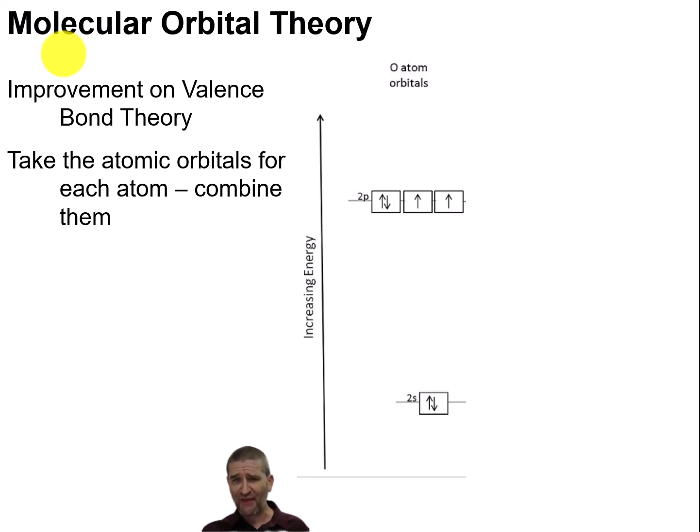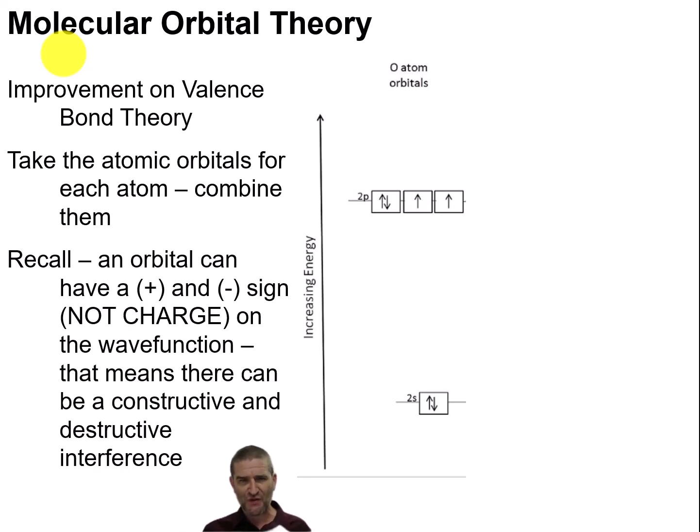When we do that, don't forget that these orbitals all had a node, or a lobe of it, that had a positive or a negative sign. Remember the red shading or the blue shading. And when we combine those two signs, remember this is not charge, those two signs of the wave function, we can have constructive and destructive interference.